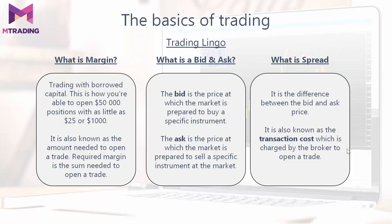So what is bid and ask? The bid is the price at which the market is prepared to buy a specific instrument, while the ask is the price at which the market is prepared to sell a specific instrument at the market. The spread is the difference between the bid and ask price — it is also known as the transaction cost charged by the broker to open a trade.